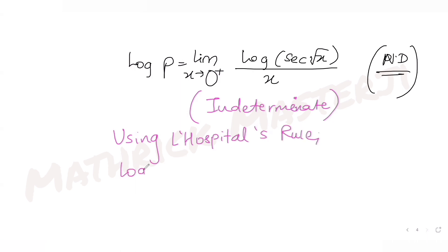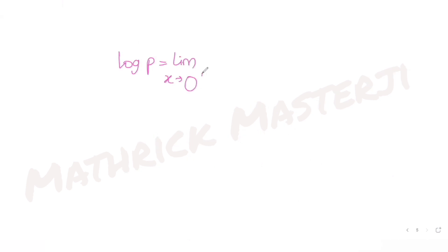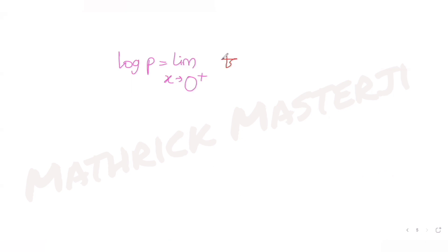Using L'Hôpital's rule: the derivative of the numerator gives (1 over sec√x) times the derivative of sec√x, which is sec√x · tan√x · (1 over 2√x). The derivative of the denominator is just 1. The sec√x cancels, leaving tan√x over 2√x.